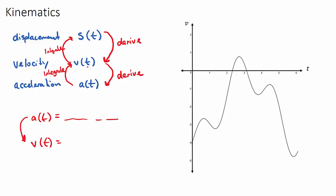Let's look at one example — a velocity curve. You'll need to deal with velocity, displacement, and acceleration curves in this topic. Looking at the first six seconds of this journey: at the very start, the velocity begins at negative four meters per second. A negative velocity means the object has a speed of four meters per second but is traveling backwards, in the negative direction.